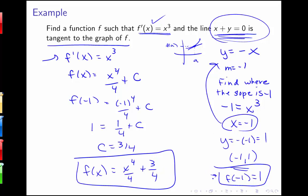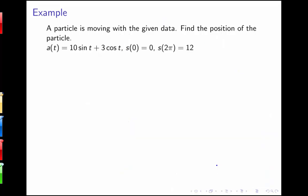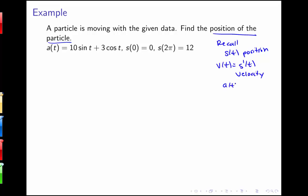Sometimes we have to derive the additional information we need to find c instead of it being given to us directly — here we had to figure out that negative 1, 1 was the point we needed. Often we're trying to find the position of a particle given information about velocity or acceleration. If s of t is position, then v of t equals s prime of t is velocity, and a of t equals v prime of t equals s double prime of t is acceleration.